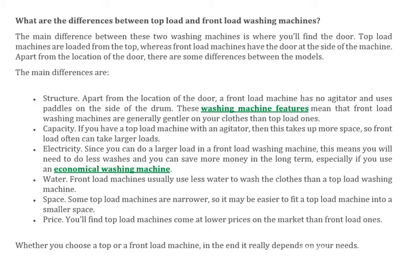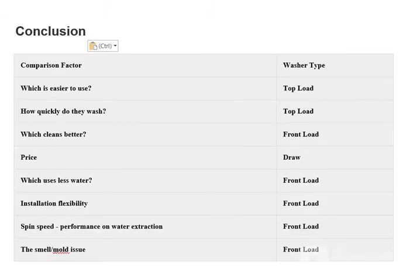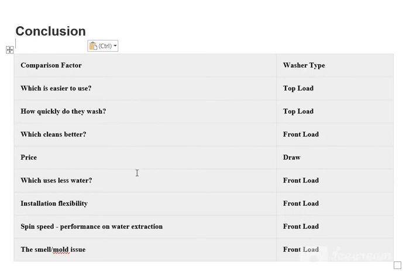In conclusion, here is a quick comparison: ease of use goes to top load; washing speed also favors top load; better cleaning goes to front load; top load is cheaper while front load is costlier; front load uses less water; front load wins on installation flexibility and spin speed; front load also performs better on water extraction. One issue with front load is mold or smell, but this is solved by cleaning the machine regularly — no problem with that.